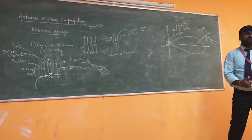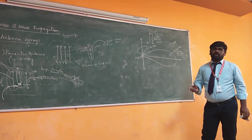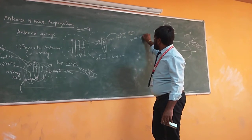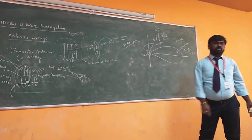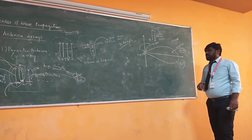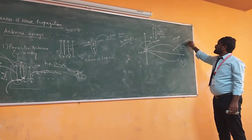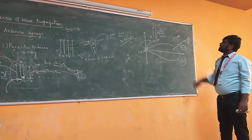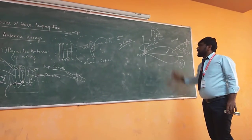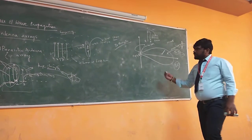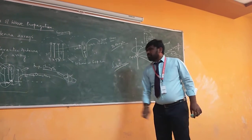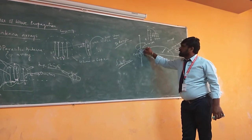A Yagi-Uda antenna can receive or transmit signals with high accuracy. That is why it is used in TV reception signals — without a good Yagi-Uda antenna, no TV channels can be received. It is also used in satellite communication, dealing with signals from thousands of kilometers above. Currently, Yagi-Uda antennas give 3 to 5 percent noise.